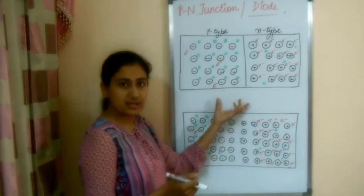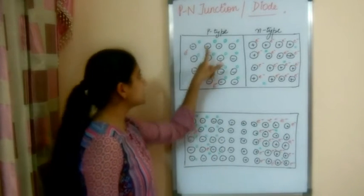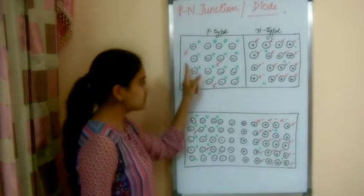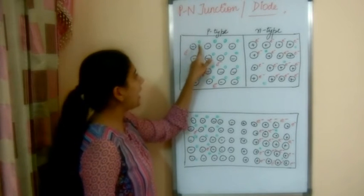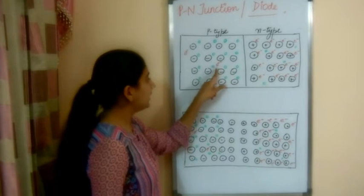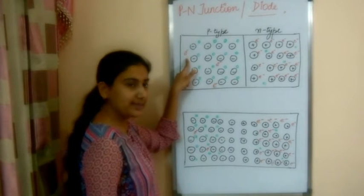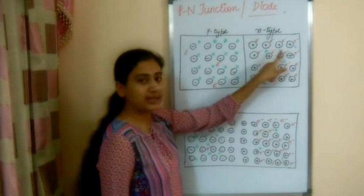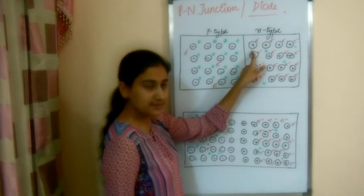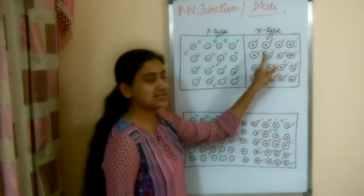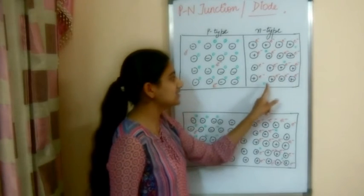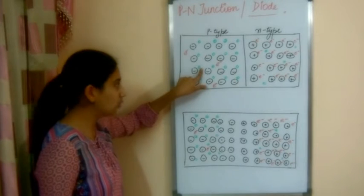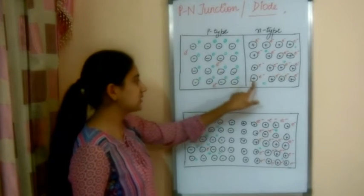This is the representation of a PN junction. The P-type semiconductor has acceptor atoms, denoted in the diagram, with holes as majority carriers and electrons as minority carriers. The N-type semiconductor has donor atoms and electrons as majority carriers with holes as minority carriers. The green dot represents holes and the red E represents electrons.